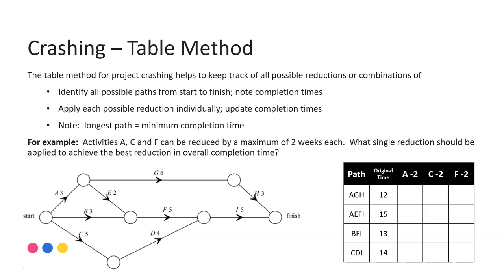Note that in this method you don't need to do a forward and backward scan to identify the critical path — this is a way you can identify the critical path regardless of what previous questions ask. What this method doesn't show is earliest and latest start times. I would only use this if I had a particularly challenging crashing question, or the question was solely about critical path and crashing. Here, the longest original time is the current critical path: A, E, F, and I.